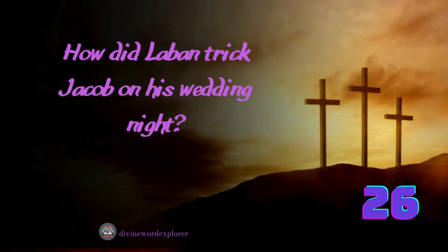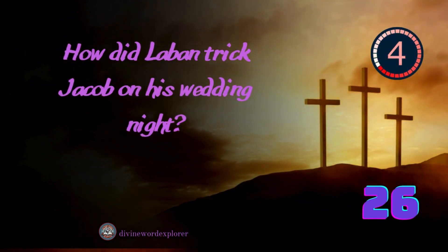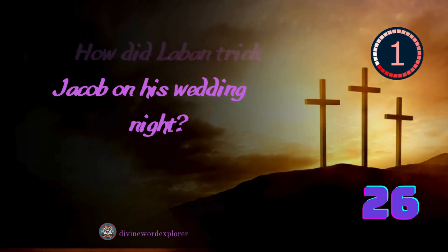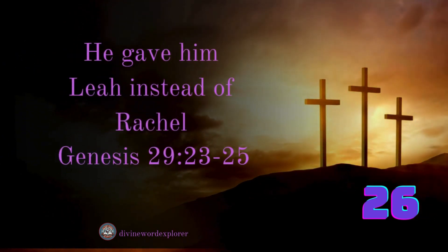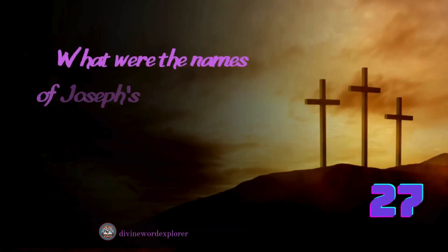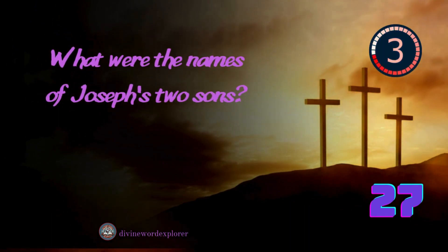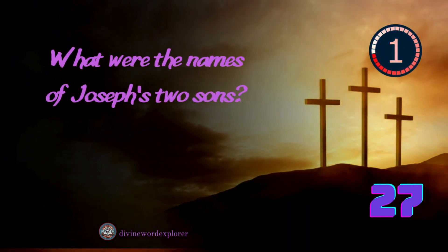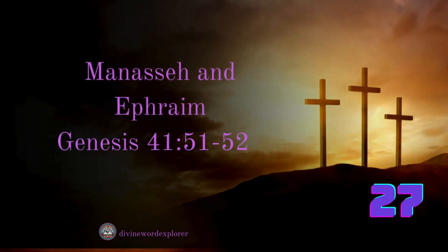How did Laban trick Jacob on his wedding night? Answer: He gave him Leah instead of Rachel. What were the names of Joseph's two sons? Answer: Manasseh and Ephraim.